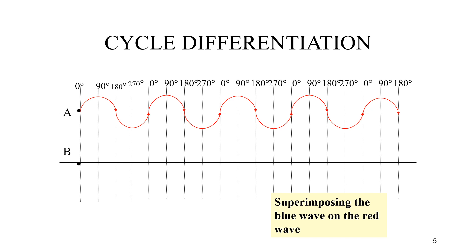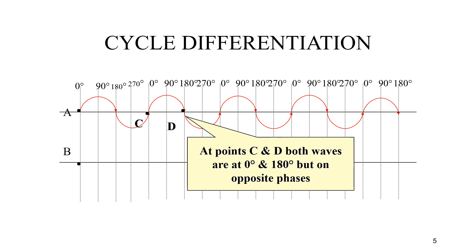If you superimpose the blue wave on the red wave, you can see how at points C and D both waves are at 0 degrees and 180 degrees but in opposite phases. I'll tell you why this is important.